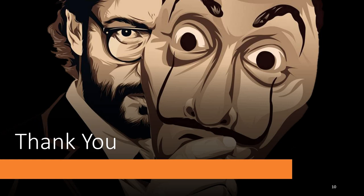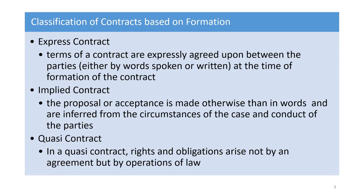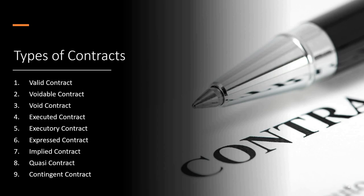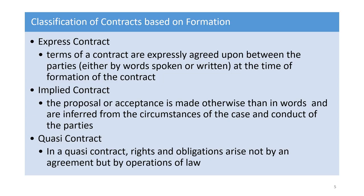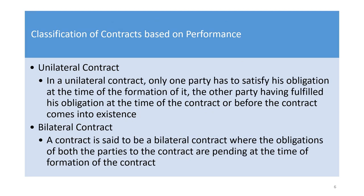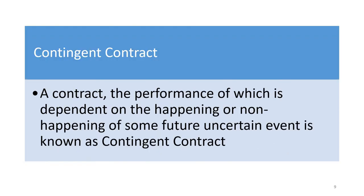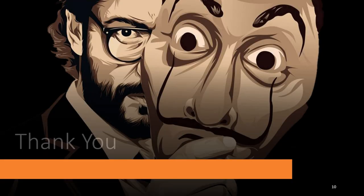To summarize the different classifications of contracts: based on enforceability — valid, void, voidable, and contingent; based on execution — executed and executory; based on formation — express, implied, and quasi; and based on performance — unilateral and bilateral. These are all the different categories of contracts.